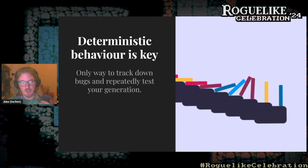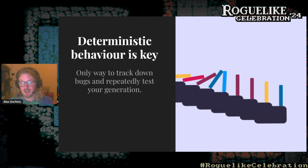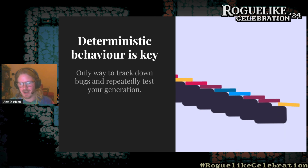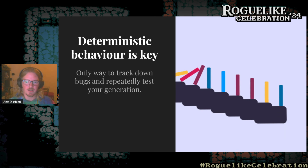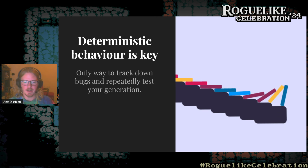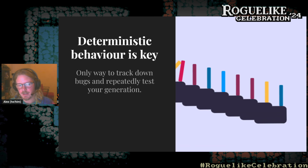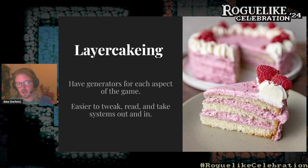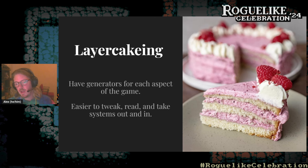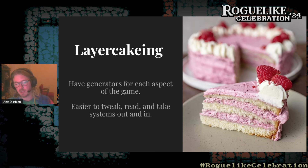Another super important thing is making sure your generation is deterministic. When generating an entire world with narrative and characters, bugs are bound to happen, and if you can't recreate the same game state your player was in, it's impossible to track down what actually went wrong. This is tied to a concept I call 'layer caking,' which is similar to composition in object-oriented programming. You have a separate generator for each aspect of the game, which makes it easy to tweak individual generators and keeps responsibilities well-defined rather than one big spaghetti code mess.